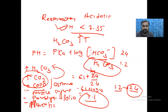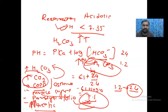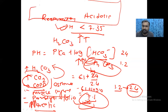As H₂CO₃ increases because of COPD, asthma, paralysis, chest injury, narcotics, or CNS depression, CO₂ accumulates and increases H₂CO₃. As H₂CO₃ increases, the pH decreases. That is called respiratory acidosis.